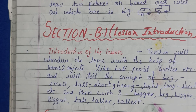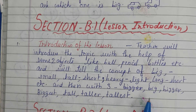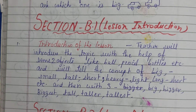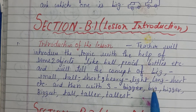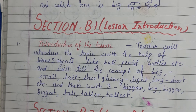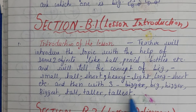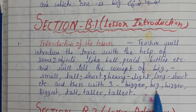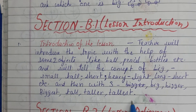You can show the objects and according to that tell the students which one is big, small, tall, short, and all these things. Then you can show three objects and explain the difference between big, bigger, biggest and tall, taller, tallest.